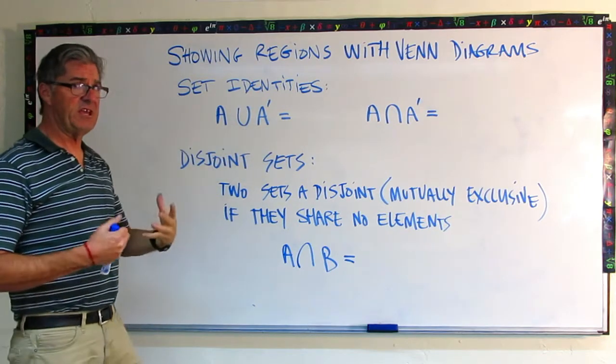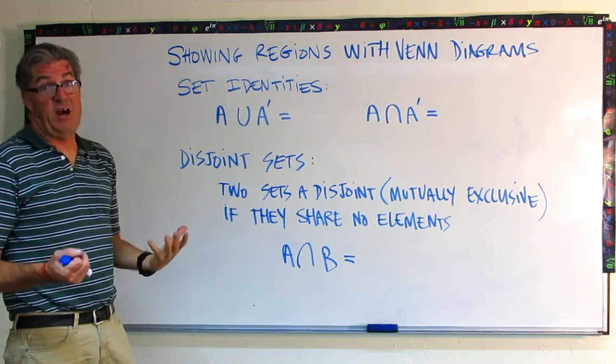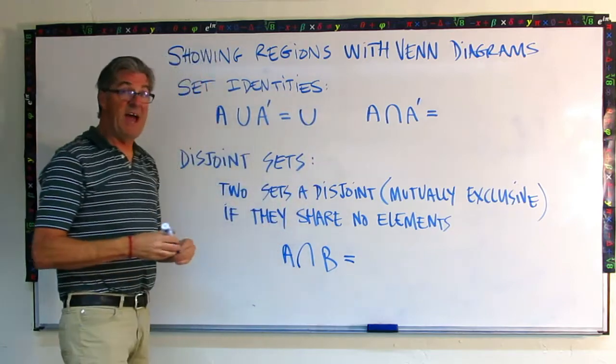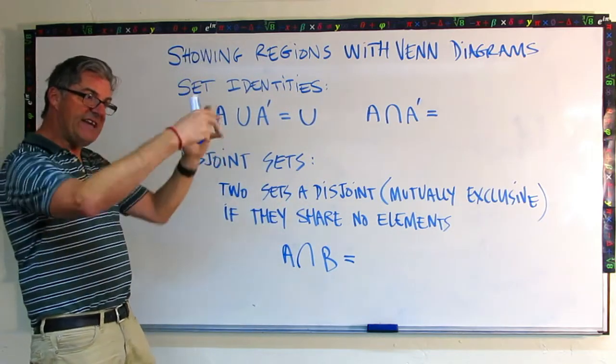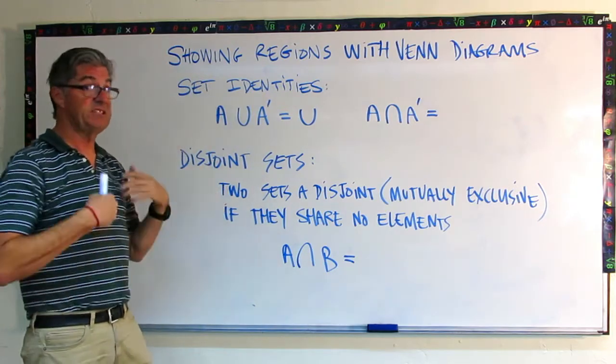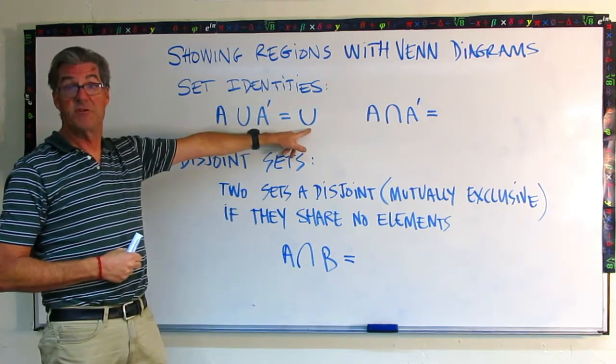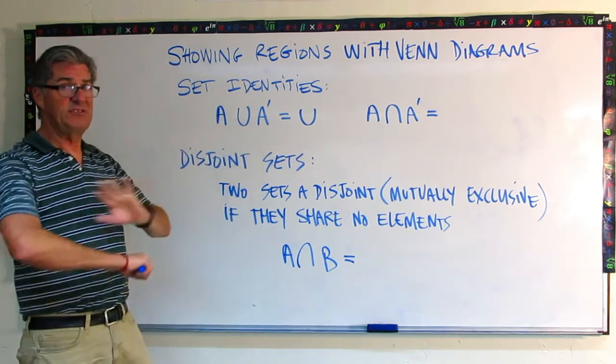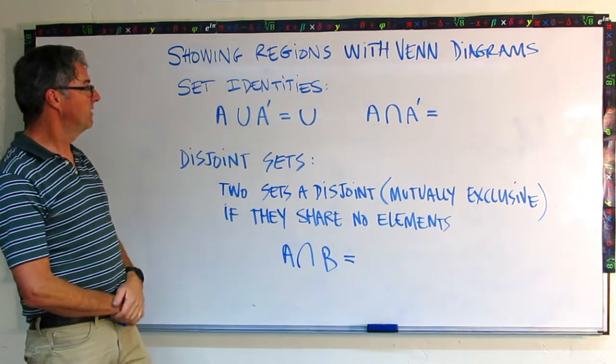So the union of everything in set A with everything that's not in set A. What am I going to put there? This is the thinking question. If you thought, well, that's got to be the universal set, you're right. Because everything that's in the circle that's set A with everything that's inside the rectangle but not in the circle, that's the complement, everything that's not in set A, then together these two things are going to make the universal set. So that's our first identity. And this is true no matter what.